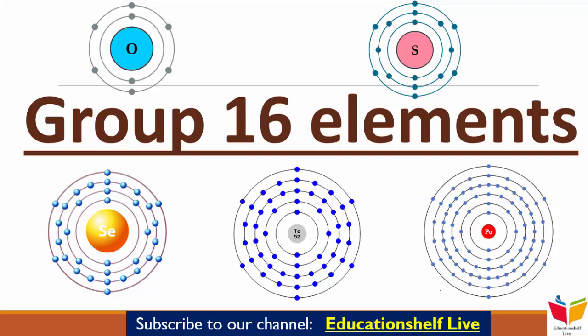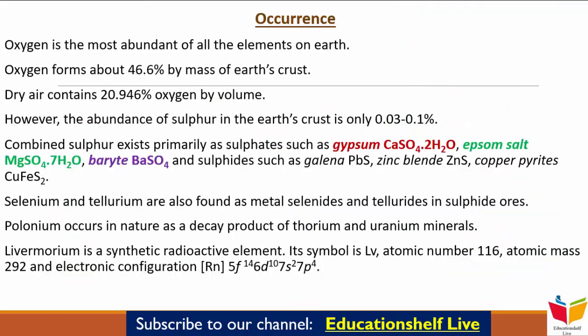सबसे पहले हम पढ़ेंगे इनके Occurrence के बारे में। Oxygen जो है, वो Most Abundant element है पृथ्वी पे। Oxygen हमारे Earth Crust का 46.6% mass बनाती है, और जो हमारी Dry Air होती है, उसमें भी 20.946% Oxygen रहती है, by volume।